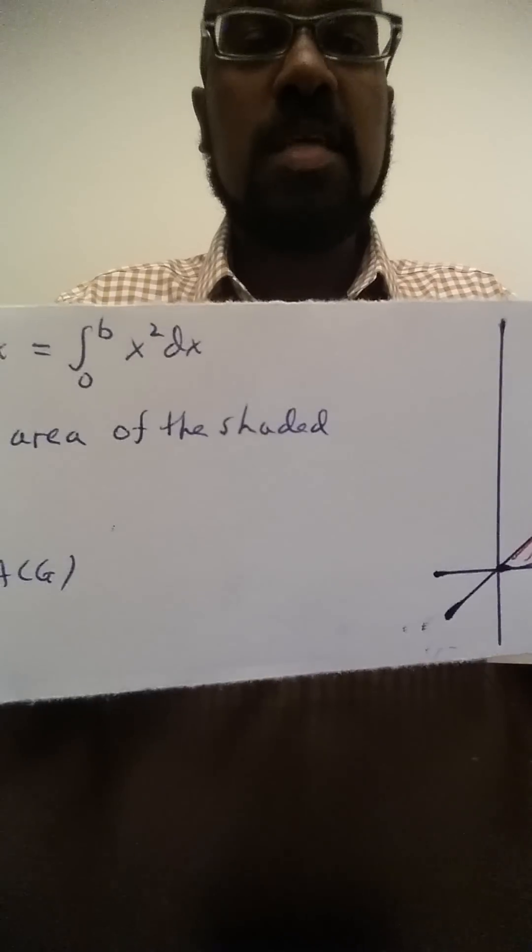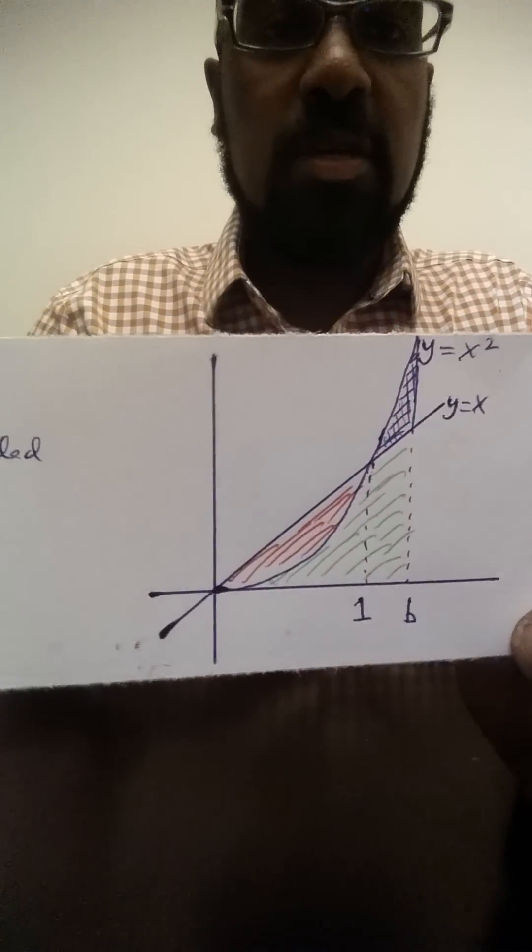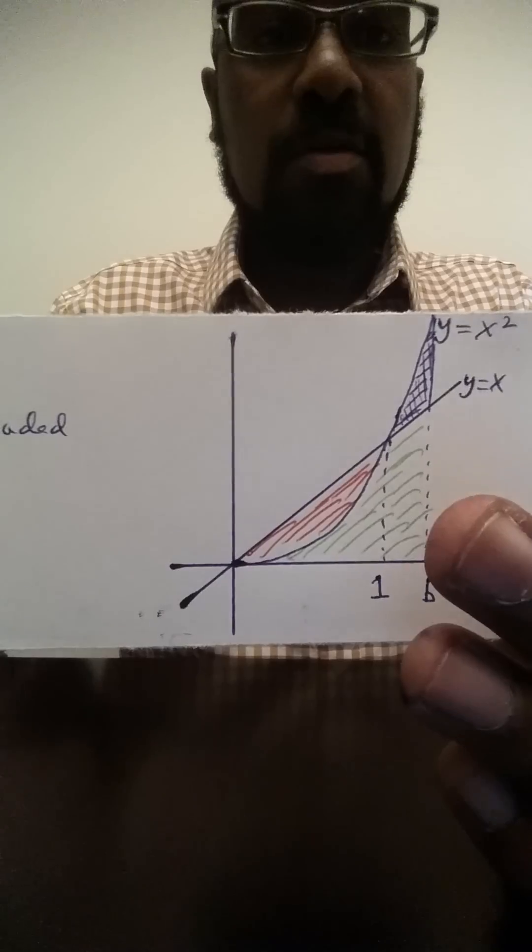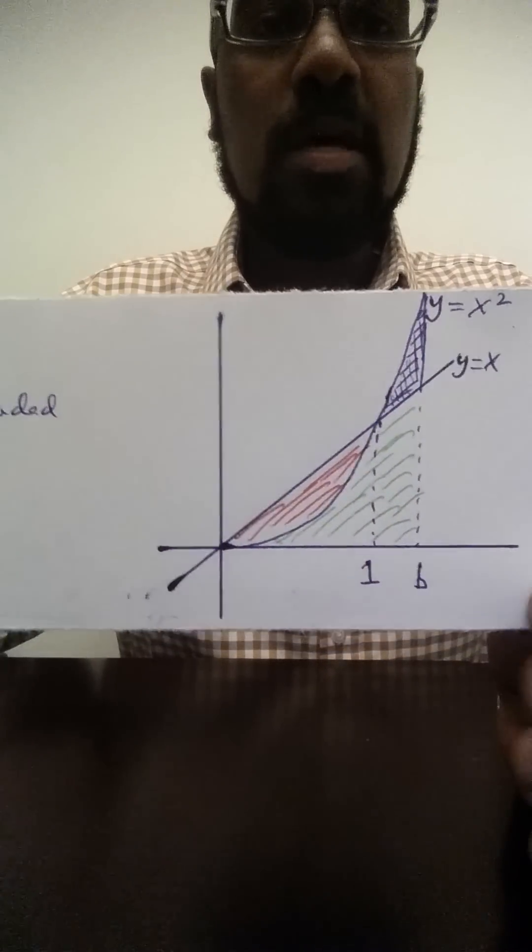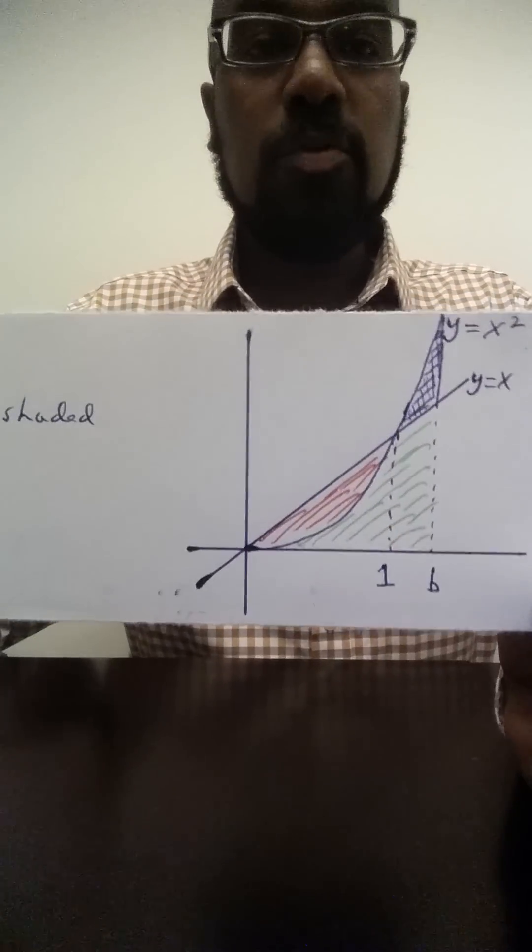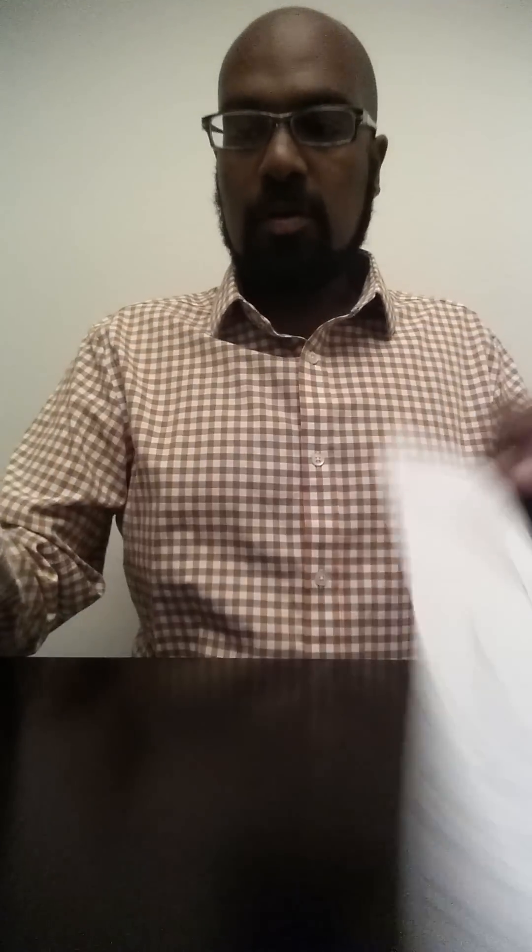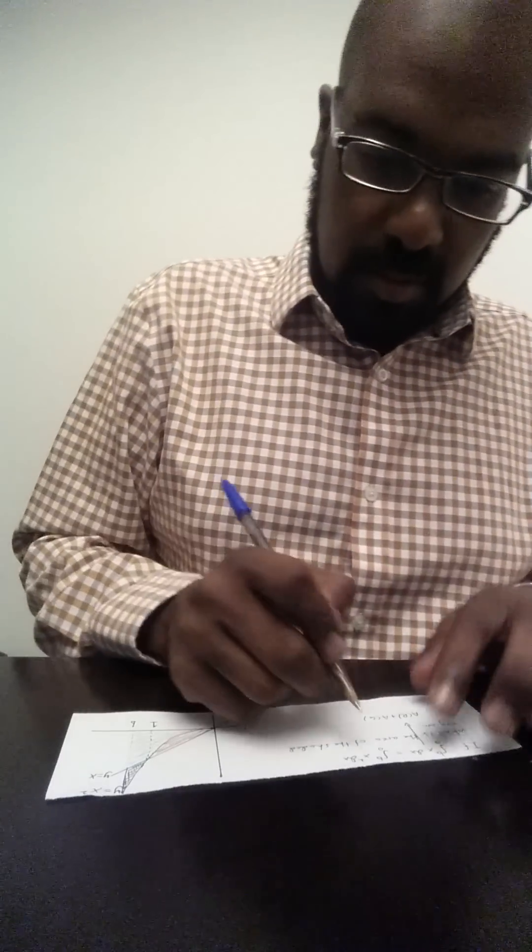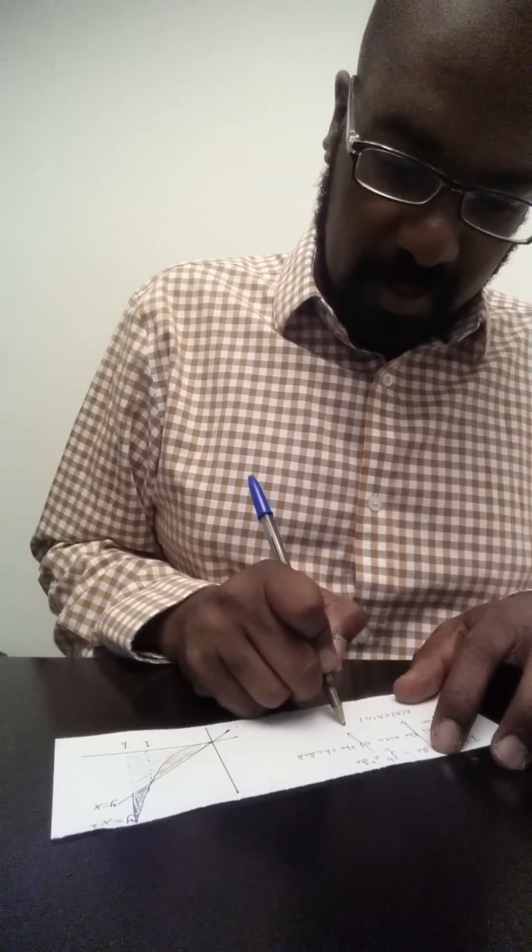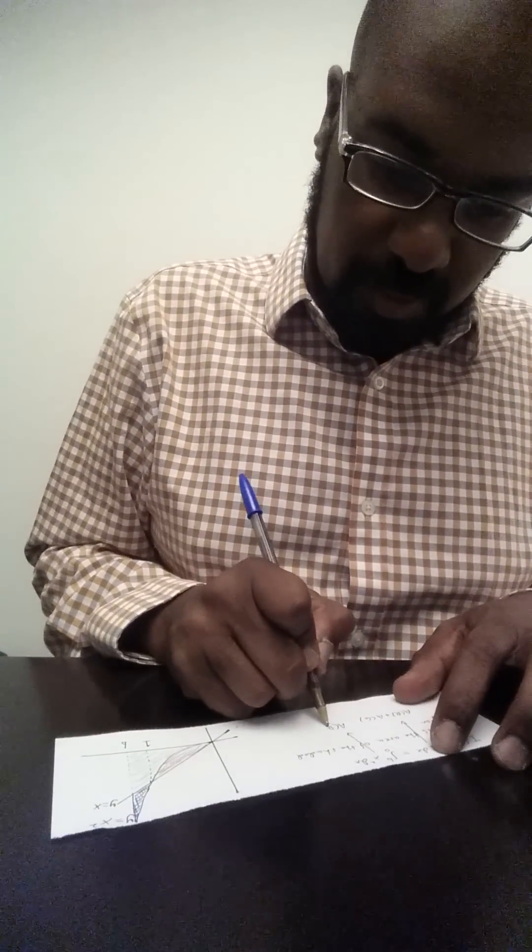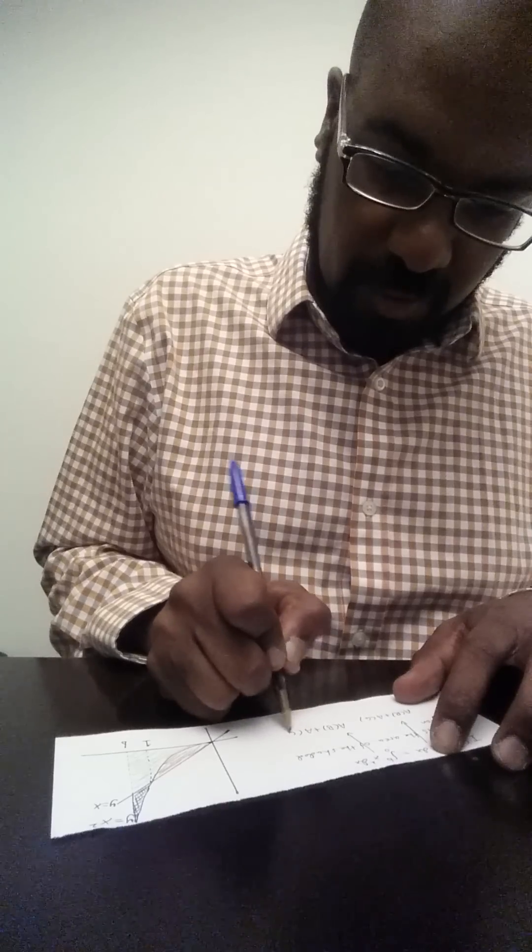What about the second integral? The integral from 0 to b of x squared is the area under the curve x squared, which is the green region plus the blue region's area. So the other integral is the area of the blue region plus the area of the green region.